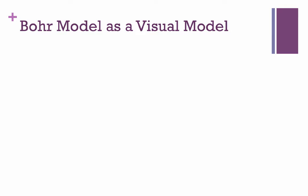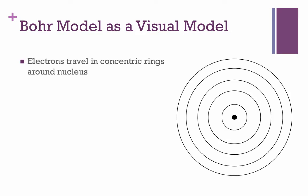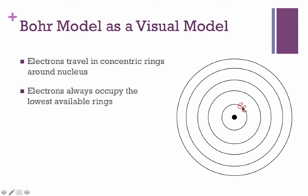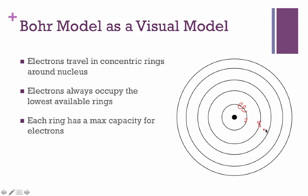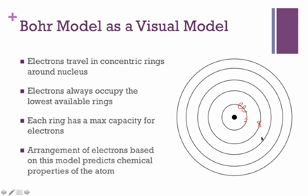Let's quickly recap the Bohr model as a visual model of the atom. Electrons travel in concentric rings around the nucleus, occupying the lowest available rings. Each ring has a maximum capacity — two for the first ring, eight for the second, and so on. The arrangement of electrons based on this model can potentially predict the chemical properties of the atom. However, this is a very simple model and as a result doesn't make a whole lot of predictions, and I don't want to go into much more detail than that.